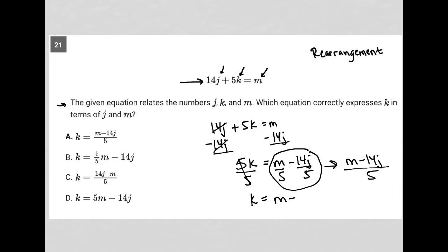This is the exact same as m minus 14j all over 5, which is how the answer represents it. So m minus 14j all over 5, and that is choice A here, m minus 14j divided by 5. Choice A is the correct answer.